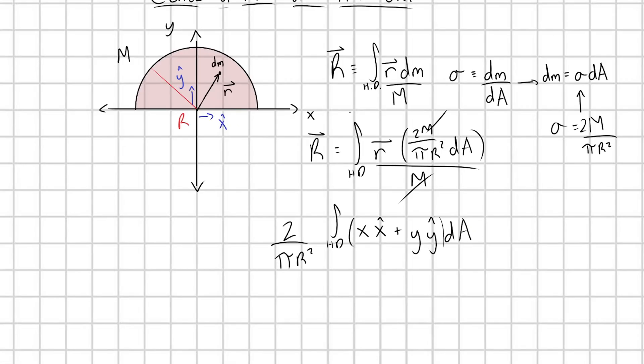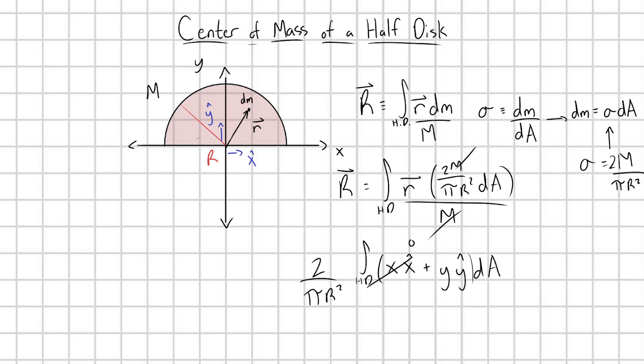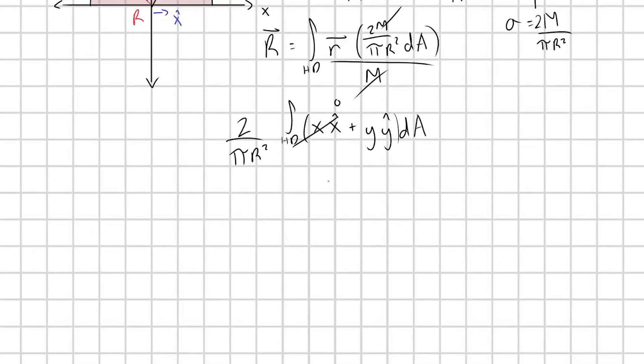Now, in theory, we would have to apply this integral twice. First in this x hat component, and then second in this y hat component, so we'd have to do two integrals. However, I think we can all agree that the center of mass in the x direction is of course just going to be zero. By symmetry, we have this uniform disk here, so we have an equal amount of mass on the left and the right side, so the center is always going to just average out to x equals zero. And so if that's the case, if the x position of our center of mass is zero, all that we're left with, we just have to do one integral here. So 2 over pi R squared integral over my half disk, y y hat dA.